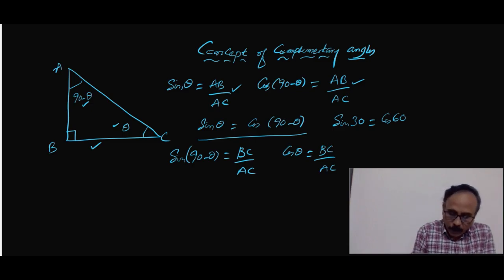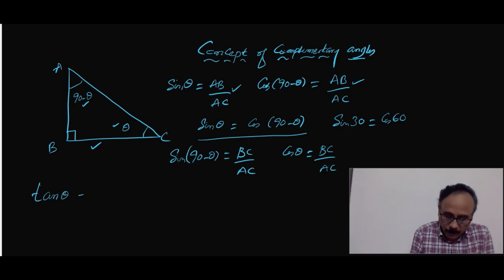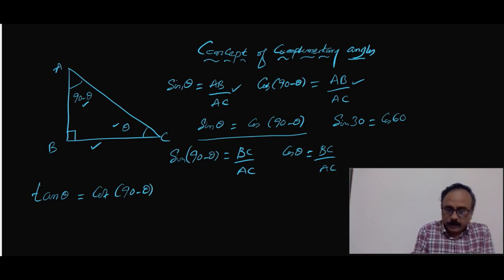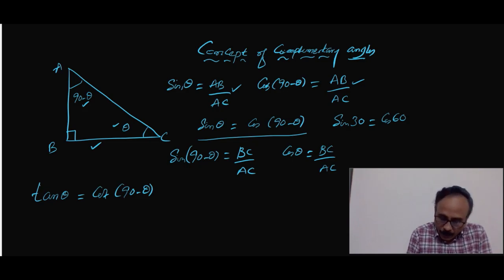Similarly we can find a relation between tan θ and the complementary of tan θ, that is cotangent or cot θ. So tan θ can be written as cot(90 minus θ). We know tan θ is perpendicular by base and cot θ is base by perpendicular. And cot θ can also be written as tan(90 minus θ).